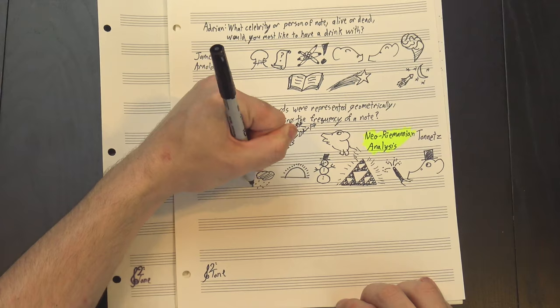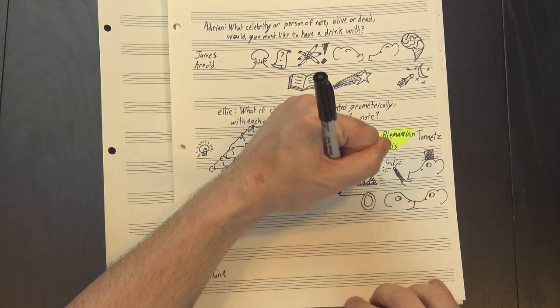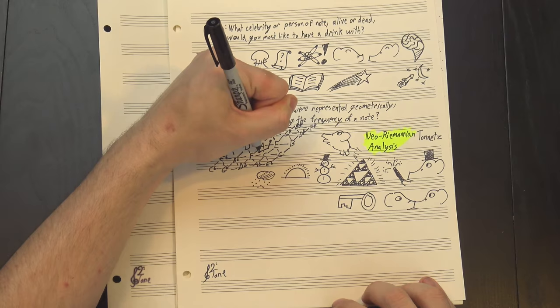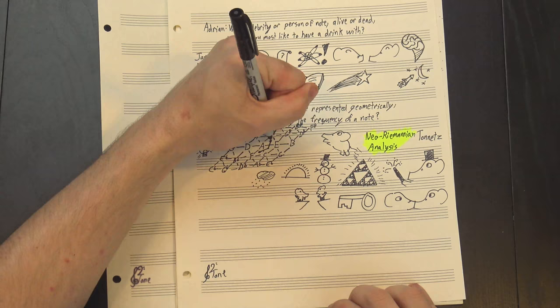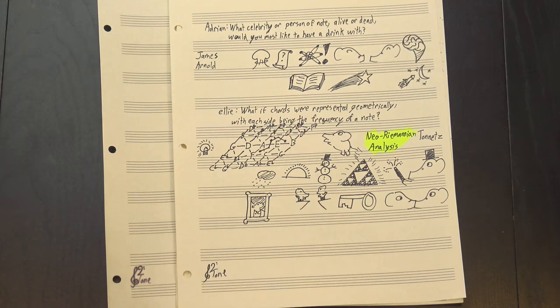The reason this matters is that it gives us a way to describe how close two chords are without having to worry about something like a key center. For instance, we saw this A major here, and if we go just two triangles over, we can find F major, which tells us that even though we don't tend to see these two in the same key, in a sense they're just as close as A and E. This can be a really useful tool for exploring that post-tonal stuff we were talking about before where keys are vague or non-existent.